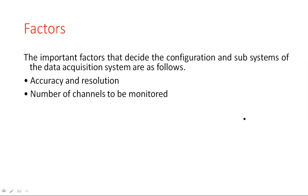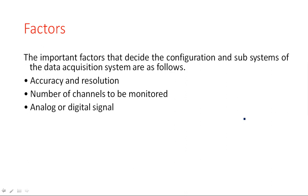The next factor is the number of channels to be monitored. In the previous example of the data acquisition system I considered four different channels, so likewise how many number of channels must be monitored. Also, what type of signal we are giving — whether it is an analog signal or digital signal.